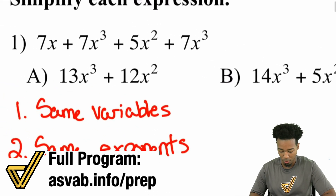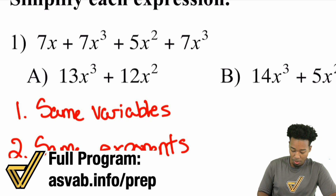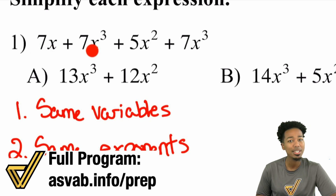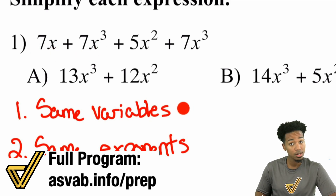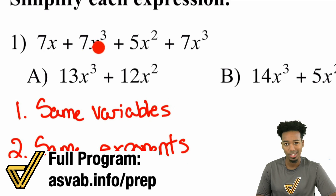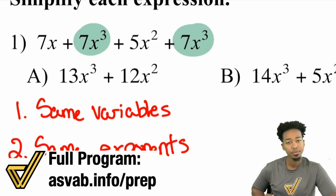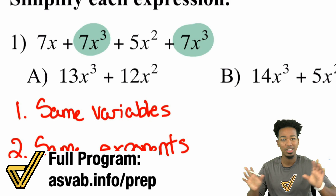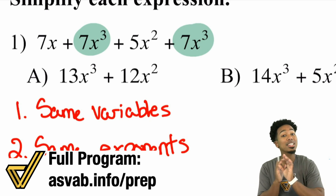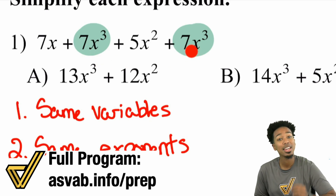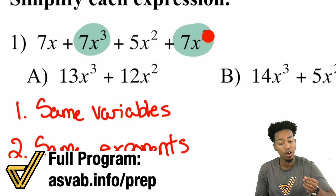I'm going to use a highlighter here to show you exactly which of these terms are like terms. Zooming in on number one — we have x and x cubed. These are not like terms. They may look like like terms, but they are not, because you have the same variable, which is good, but we don't have the same exponents. So x and x cubed — not the same, can't combine them. We have 5x squared and 7x cubed. The only like terms are the two 7x cubed terms, because they have the same variable and the same exponent.